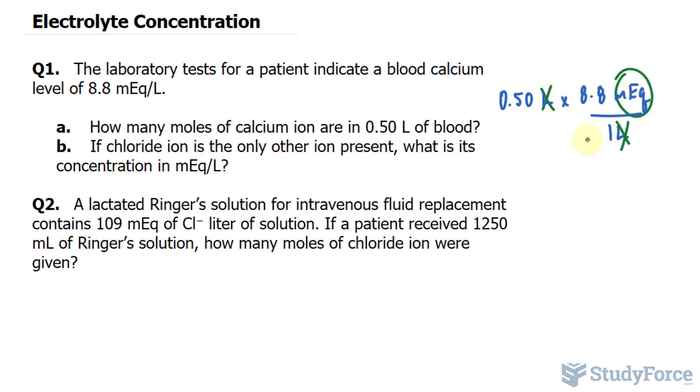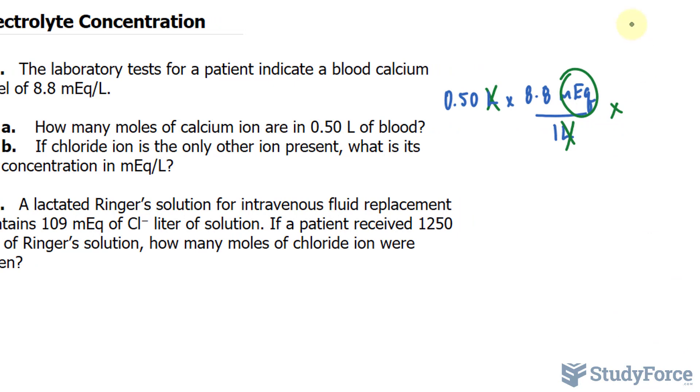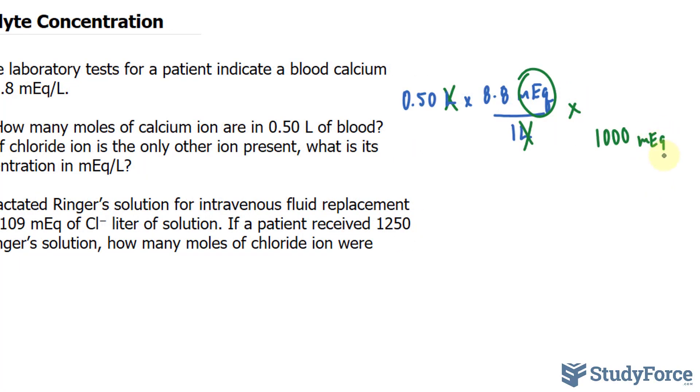Then I want to convert milli to non-milli units. So I'll multiply this by, remember that 1,000 milliequivalents is equal to 1 equivalent. This unit now will cancel out with this unit, giving us the amount of equivalents. And we'll need this for the next step.